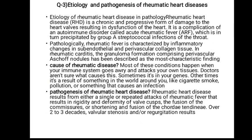Causes of rheumatic heart disease: most of these conditions happen when a person is suffering from immune system disorders, or sometimes hereditary factors, cigarette smoking, pollution, and infection. Pathogenesis: rheumatic heart disease results from either single or repeated attacks of rheumatic fever that result in rigidity and deformity of valve capsules, the fusion and shortening of tendons over two to three decades, causing stenosis and regurgitation.